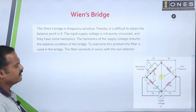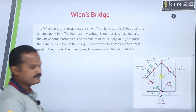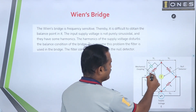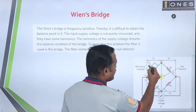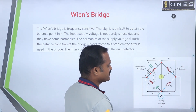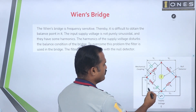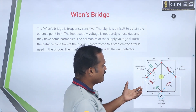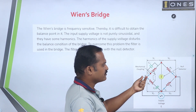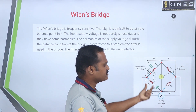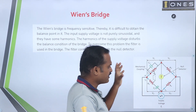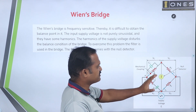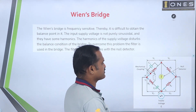Now, this is the circuit we need to know. For an unknown high frequency we need to measure, we derive the balanced equation — the frequency equation. Let us take the structure; this is the Wein's bridge structure.